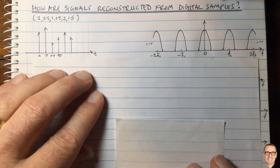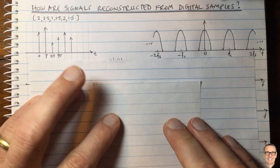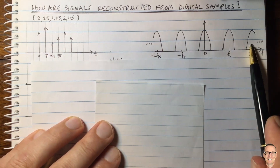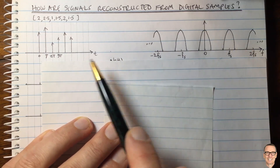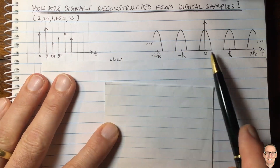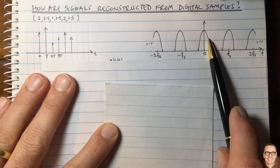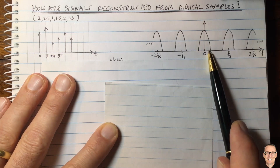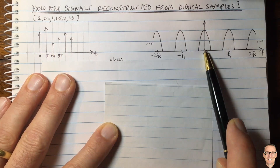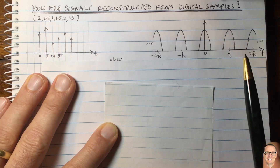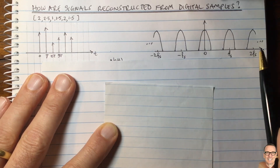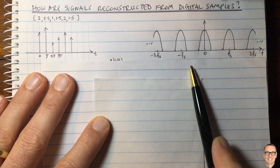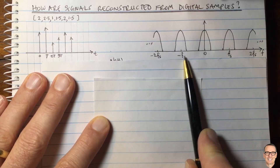Let's understand why by looking in the frequency domain. The Fourier transform of this waveform shows that the low-pass transform of the original signal, once sampled, has copies repeating at the sampling frequency, the negative sampling frequency, twice the sampling frequency, and so on. There are other videos on the channel about sampling — check out the description below.